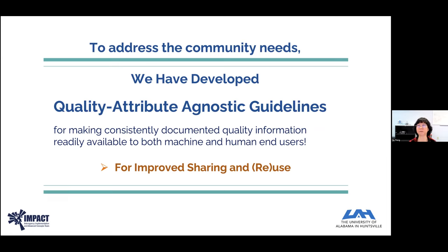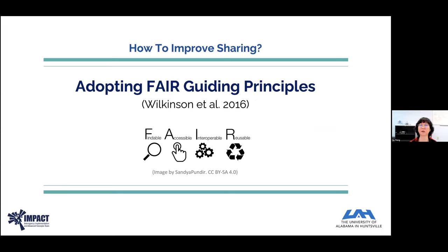To address the community need, the working group has developed quality-attribute-agnostic guidelines for improved sharing and reuse of quality information. To help improve sharing, we have adapted the FAIR guiding principles as defined by Wilkinson et al. 2019.